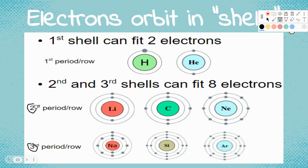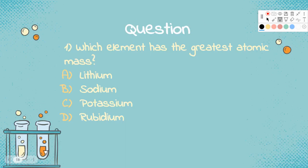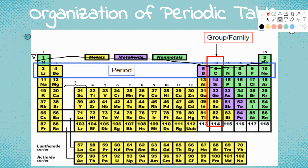If they're in the second period, they have two shells. If they're in the first period, they have one shell, and so on. In the fourth period they're going to have four shells, fifth period five shells. The first one has one shell, then two shells, then three shells, four shells, five shells. All of these have six shells, these have seven shells. That's how they're broken up — these periods correspond to how many shells they have.